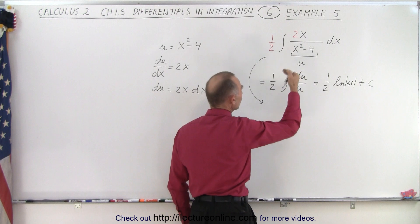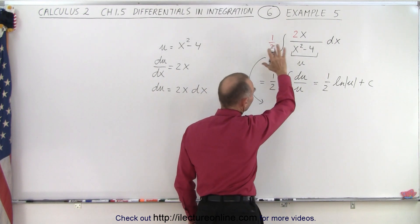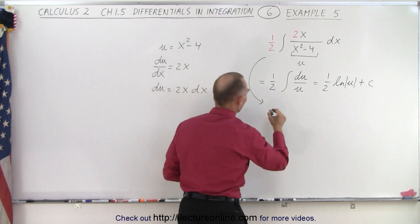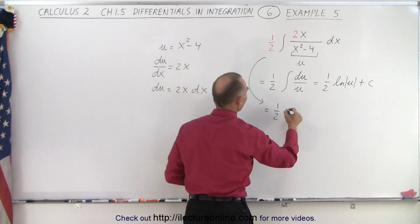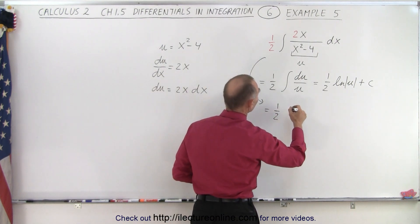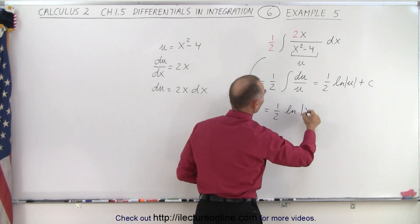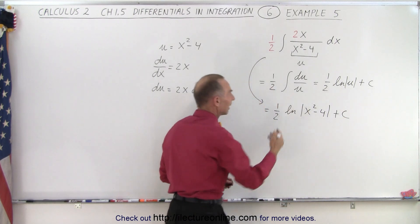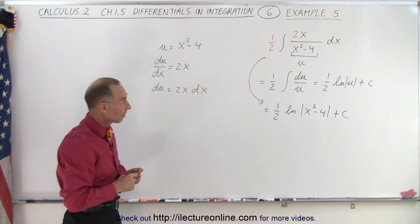We now realize that it's a du over u, and the differential in the numerator, 2x dx, will disappear. And we end up with being equal to one half times the natural log of x squared minus 4, plus a constant integration. And that is how we find the proper differential.